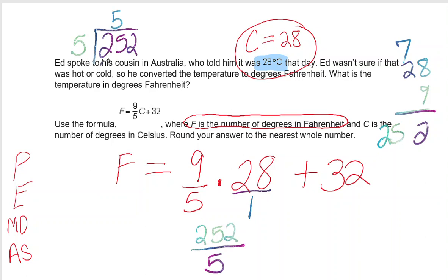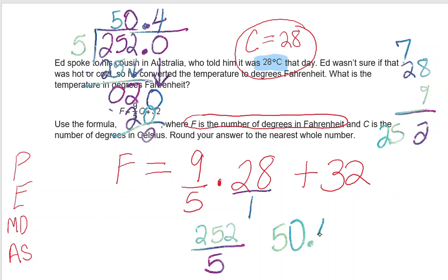252 divided by 5: 5 goes into 25 five times, 5 times 5 is 25, subtract I get 0. Bring down my 2. 5 does not go into 2, so I'm going to put a 0, and then I'm going to add a decimal and bring down the next 0. 5 goes into 20 four times, 5 times 4 is 20. So now I have a remainder of 0. 252 divided by 5 equals 50.4.